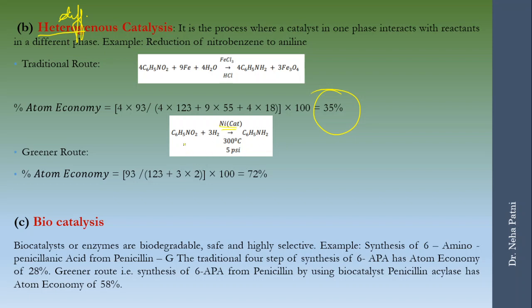At the same time if you go by a greener route and you utilize a catalyst obviously the byproduct would not be there so atom economy increases. The third one is bio catalyst. Bio origin means you are going to use enzymes or something which is biodegradable. So itself it is very safe and green concept first of all, and secondly since they are very highly selective, obviously your atom economy is going to increase because it's going to give you a specific product and it's not going to give you a byproduct.